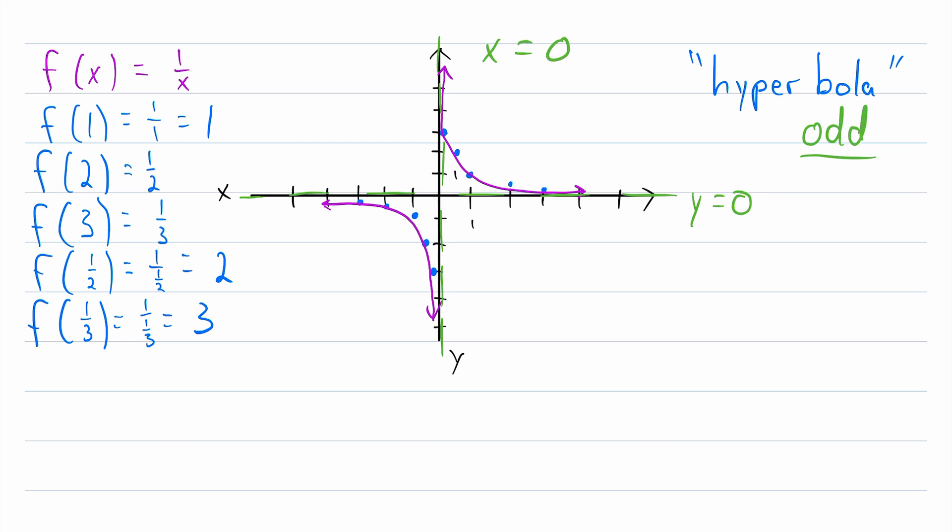So that is why it has these asymptotes. Again, it has the vertical asymptote at x equals zero, because zero is the only real number not in the domain of the function. Of course, x can get very, very close to zero, and as it does that, the y values tend towards positive or negative infinity, depending on whether the x values are positive or negative.